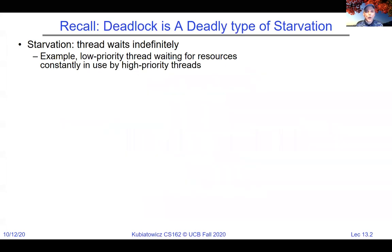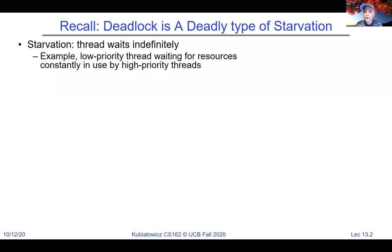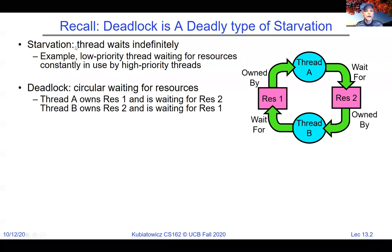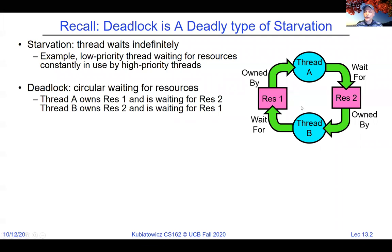We were distinguishing between deadlocks and starvation. Starvation is a general situation where a thread waits indefinitely — maybe a low-priority thread waiting for resources constantly in use by high-priority threads. Deadlock is a particular type of starvation where there's a circular waiting condition that's not going to resolve by itself. In the case of deadlock, because of this circular wait condition, it's never going to resolve.